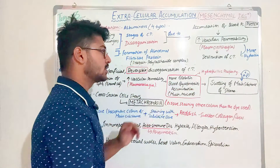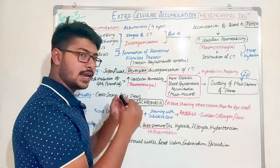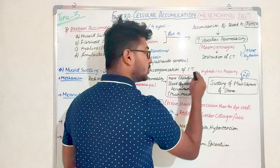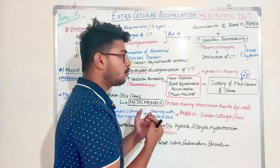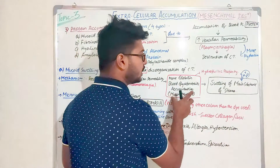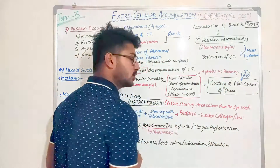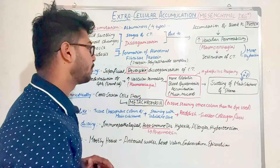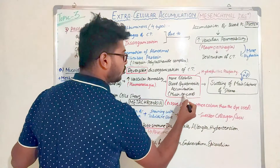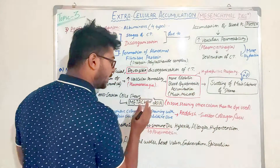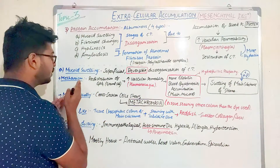Then more globulins and blood glycoproteins like mucin and mucoid accumulate. They possess hydrophilic properties — meaning they bring more and more water inside the cells and tissue — causing swelling of the main substance of the stroma and finally causing the destruction of connective tissue. It is called mucoid swelling because mucin and mucoid blood glycoproteins accumulate.